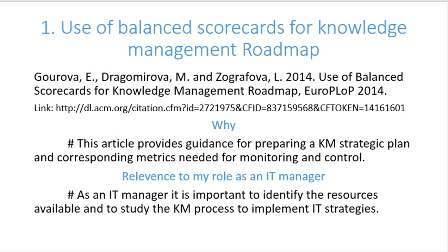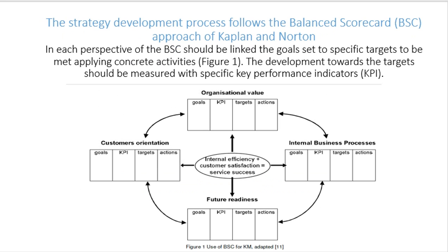As an IT manager, it's important to identify available resources and study the knowledge management process to implement IT strategies. The strategy and development process follows the Balanced Scorecard, which the writers call BSC. This is the approach of Kaplan and Norton. In the figure we can see the four perspectives: organizational value, customer orientation, future readiness, and internal business processes. Each perspective should be linked to goals set to specific targets with concrete activities, measured by a Key Performance Indicator, or KPI.